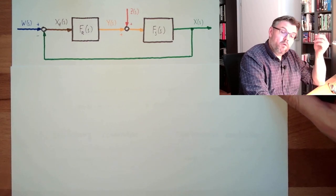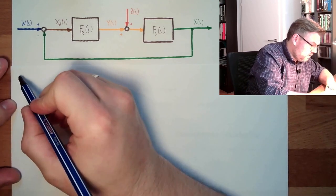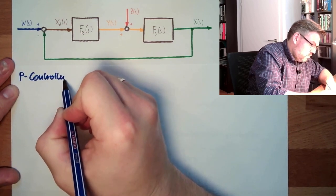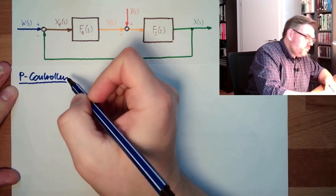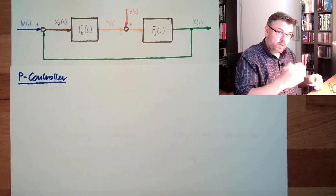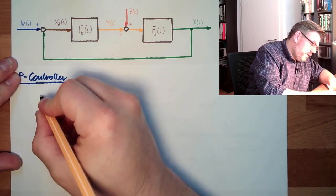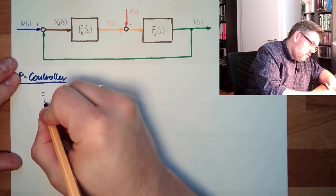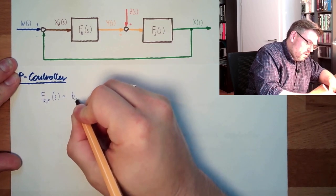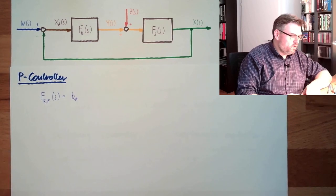The transfer function of a proportional controller or P-controller, the transfer function of this controller is basically the transfer function of a proportional element, P element. And the proportional element was just some K. So the transfer function FRP from S equals K, and to indicate it's a proportional Kp. That's the typical abbreviation of a P-controller.